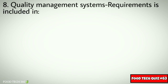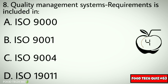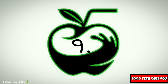Question No. 8. Quality management system requirements is included in: Options: A. ISO 9000, B. ISO 9001, C. ISO 9004, D. ISO 19011. Correct answer: B. ISO 9001.